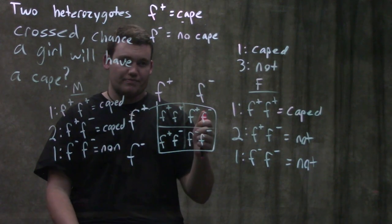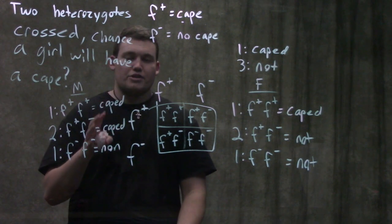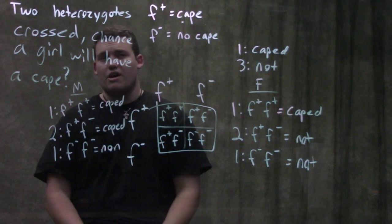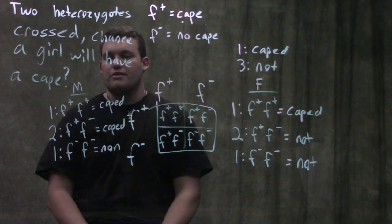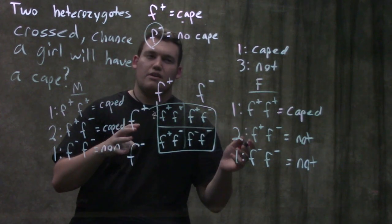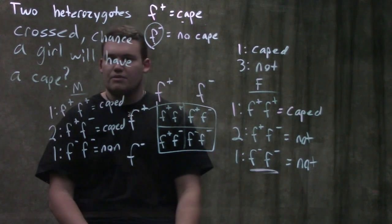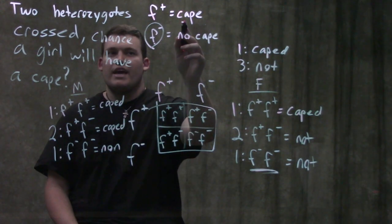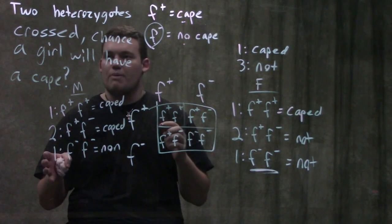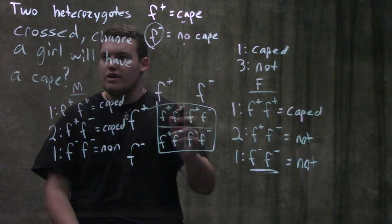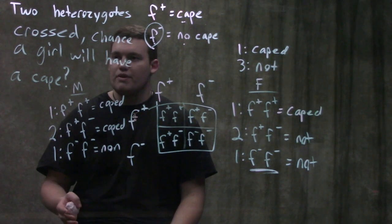To bring this home: make sure you write out your genotypes and don't assign a dominant or recessive label to an allele upfront. Students often say 'cape is the dominant allele' and then get confused when told capes are recessive in females — they'll incorrectly assume having two no-cape alleles makes a female caped. Don't do that. Just label them as the caped allele and the non-caped allele.